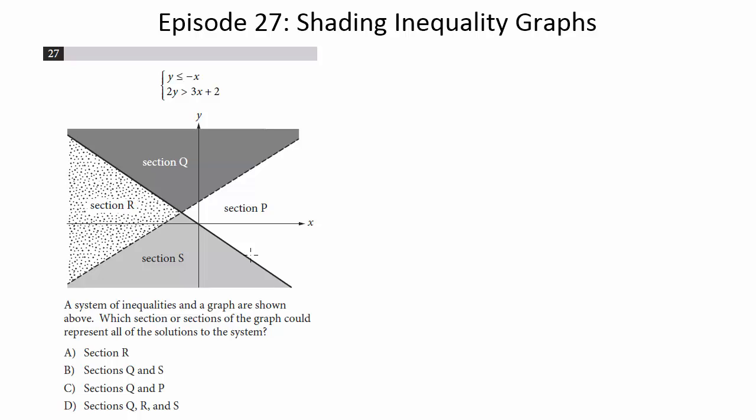A system of inequalities and a graph are shown above. Which section or sections of the graph could represent all of the solutions to the system?